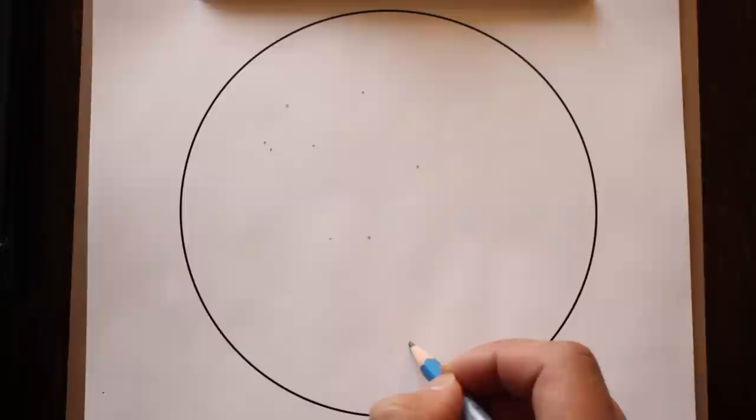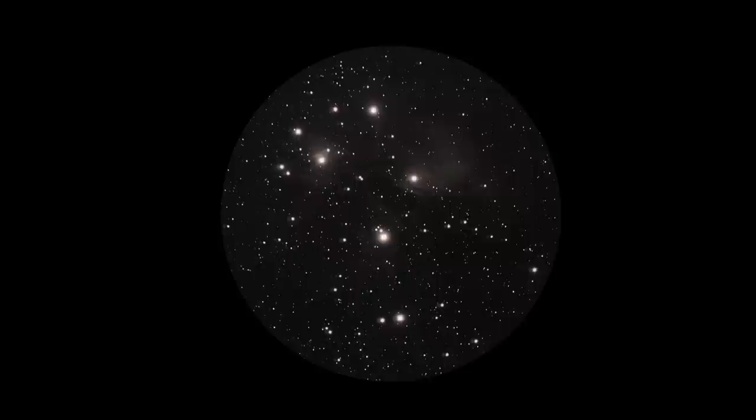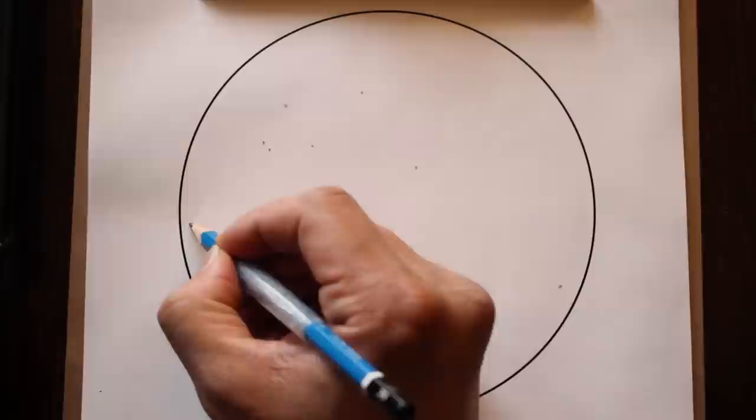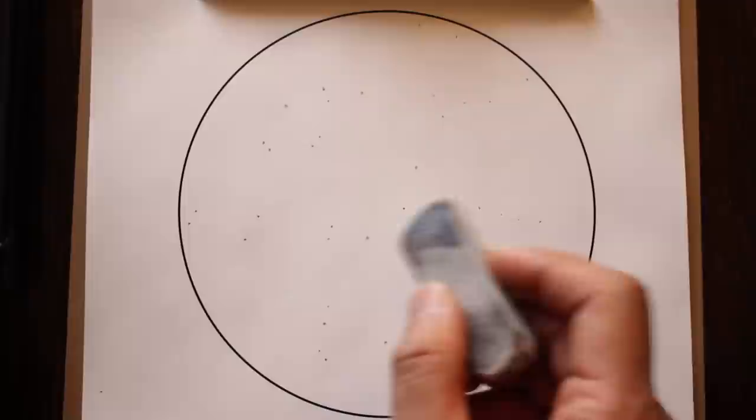Unless you have a telescope that automatically tracks stars, they will slowly drift out of the field of view because of the Earth's rotation. So remember to reposition the telescope every so often to maintain the accuracy of positioning of the stars on your drawing paper. The higher the magnification, the faster the stars will drift.